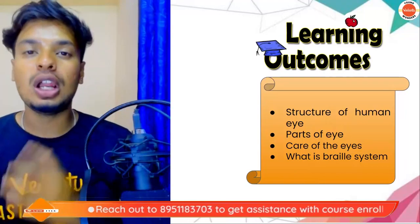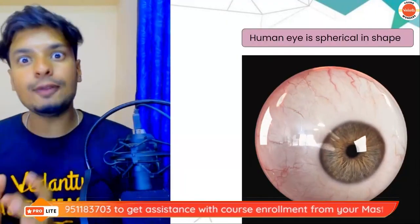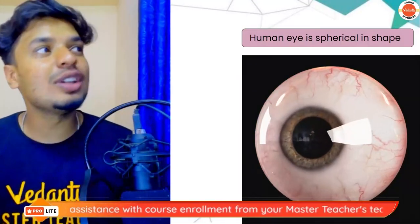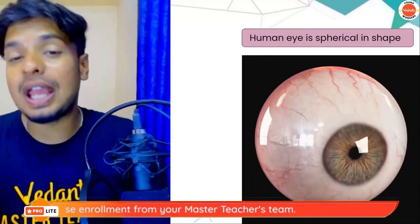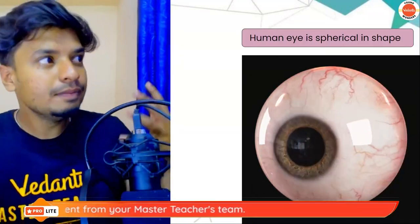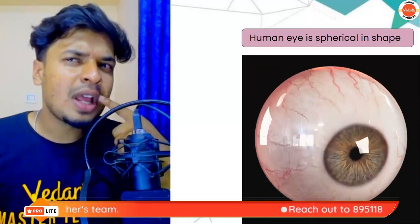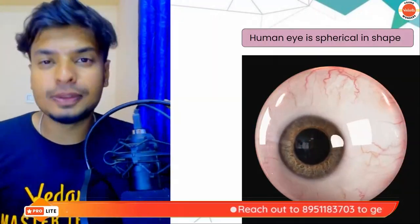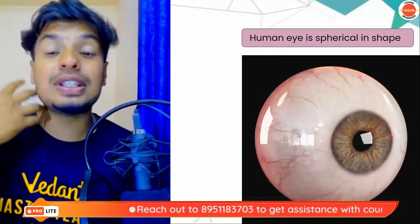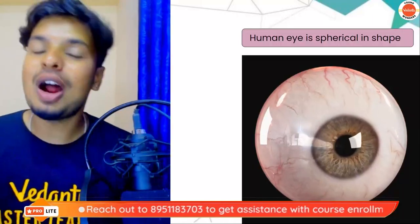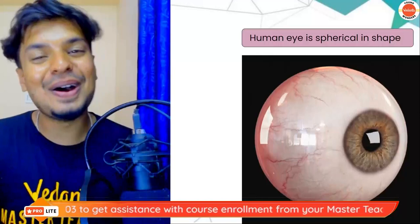First of all, let's talk about the human eye. The human eye is a wonderful organ — we can't even imagine life without eyes, as it's one of the most important senses we have. The question is: how does this amazing organ work? How is it able to perceive light and allow us to see things around us? To understand that, we'll have to study the eye.